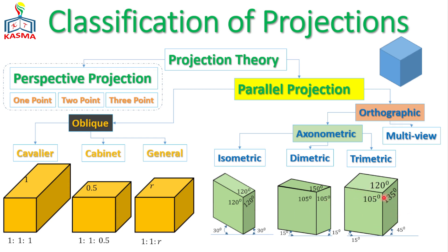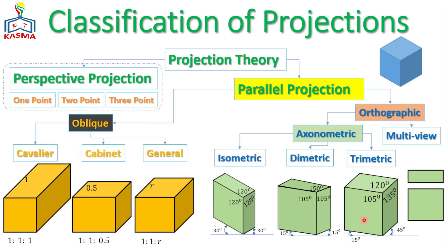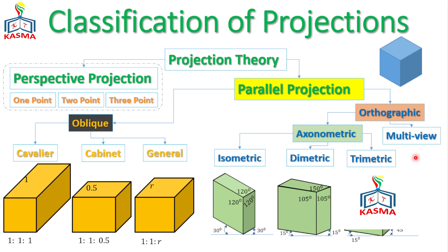For the multi-view drawing, we look at the object from different sides and project each surface. For example, looking from the side gives a rectangular surface, and looking from the top gives another rectangle. Projecting these multiple views is called multi-view drawing. That covers the classifications of projection — refer to more videos in our channel for detailed information. Thank you for watching; if you enjoyed the video, please subscribe to our YouTube channel.